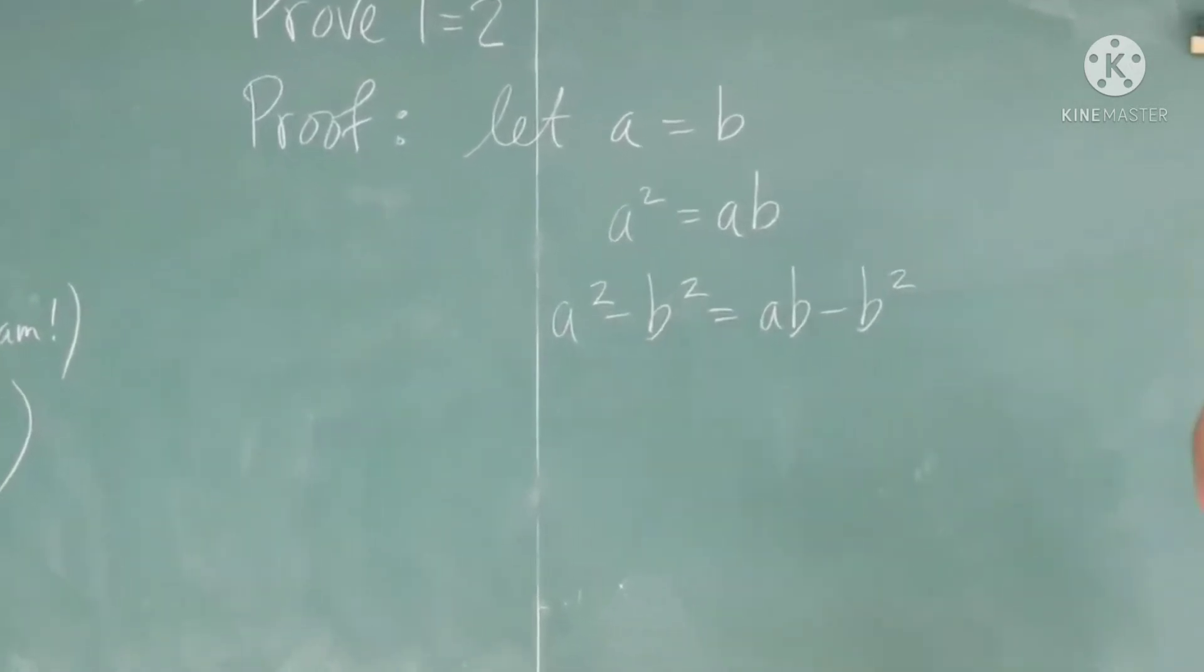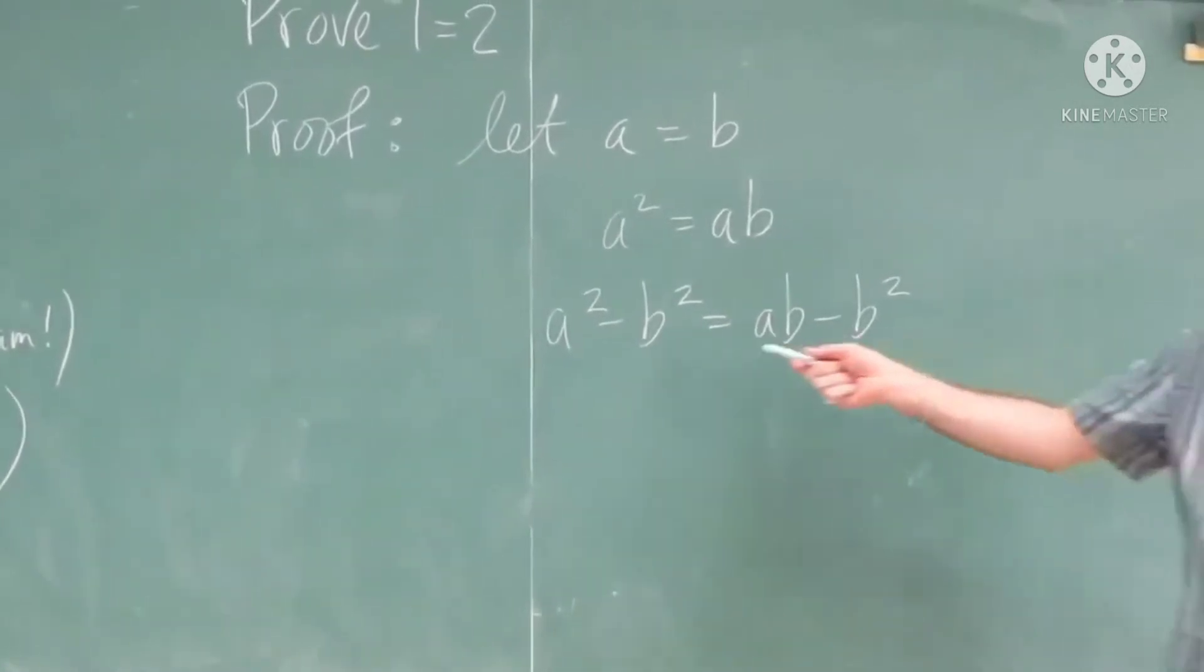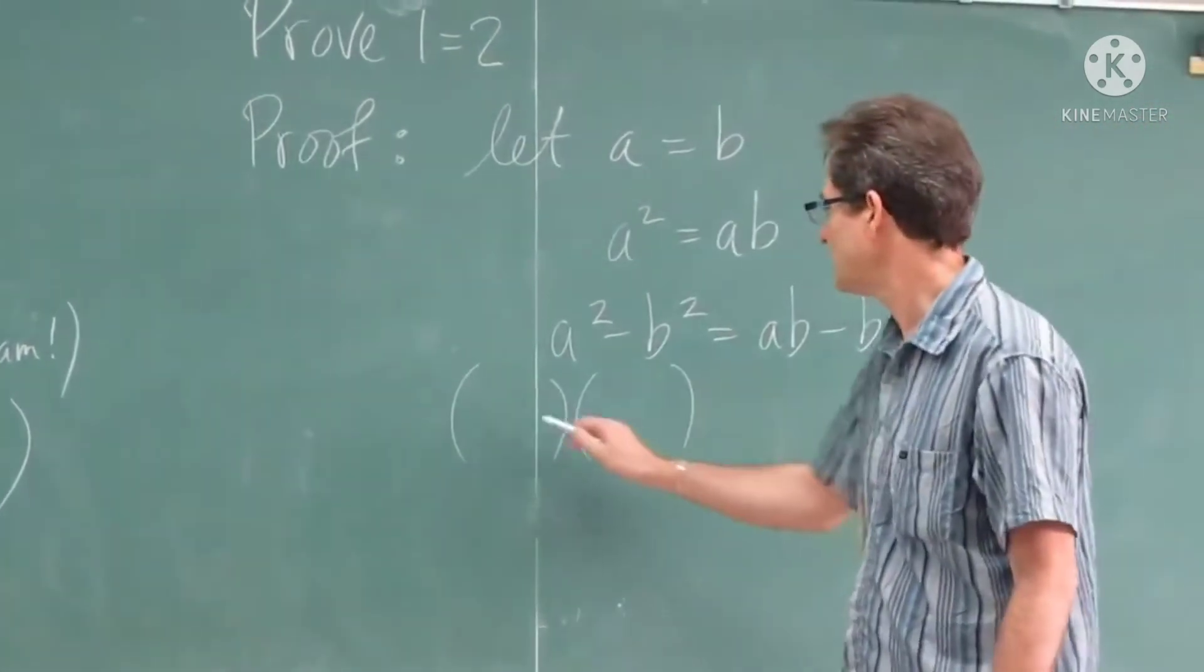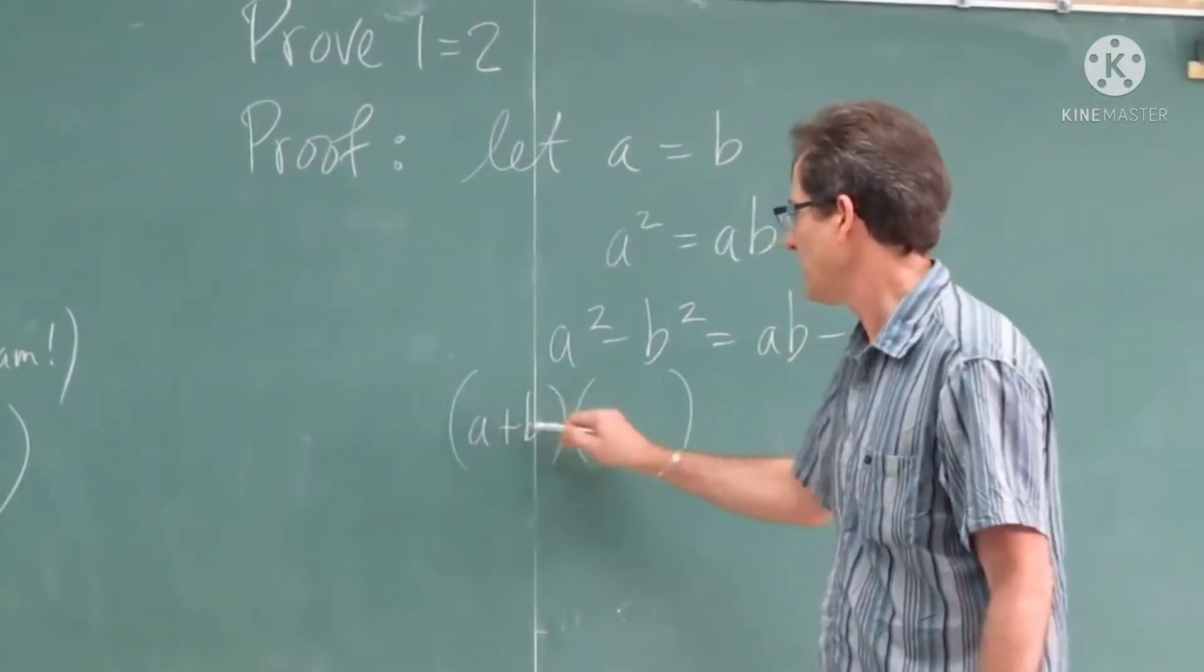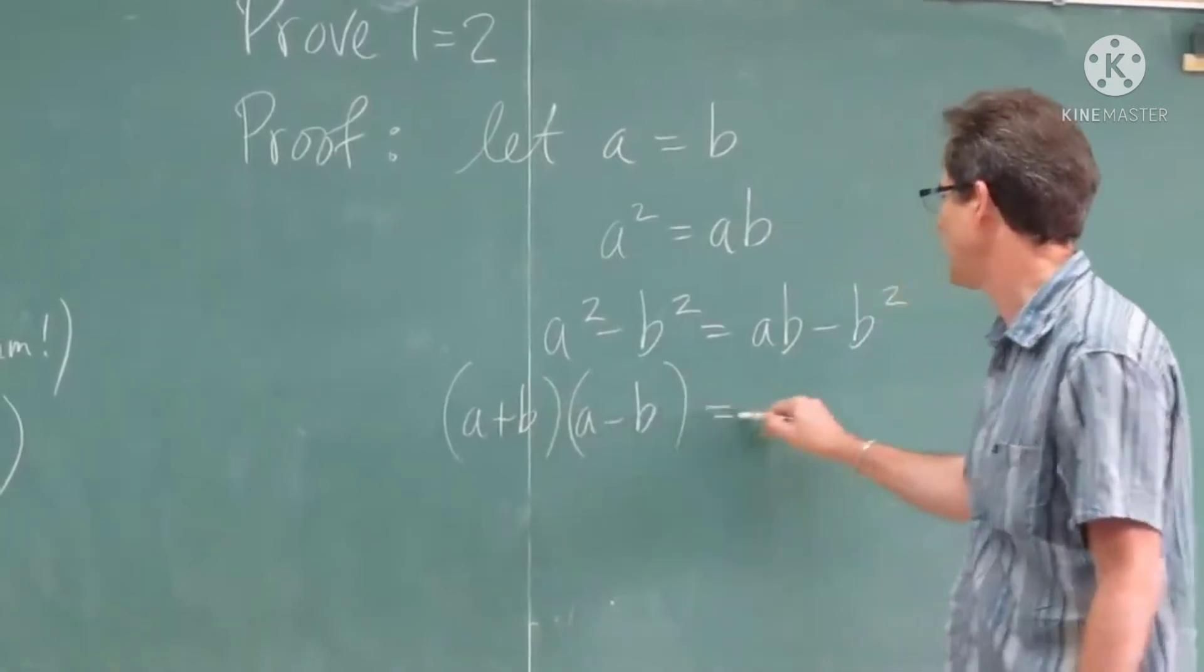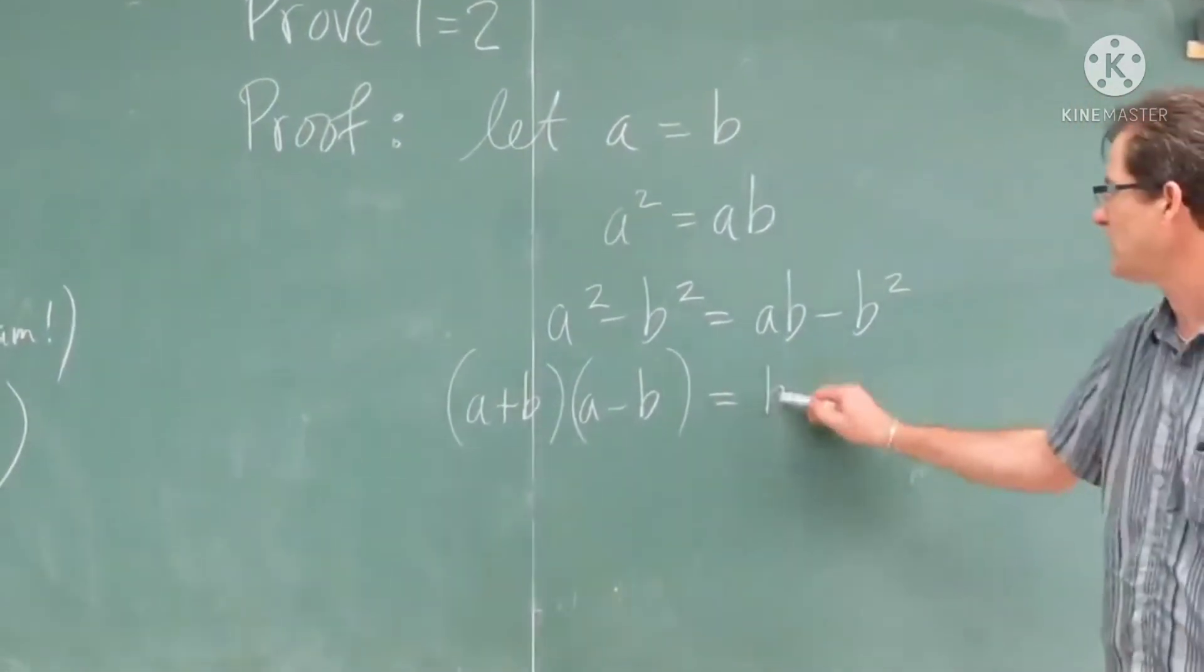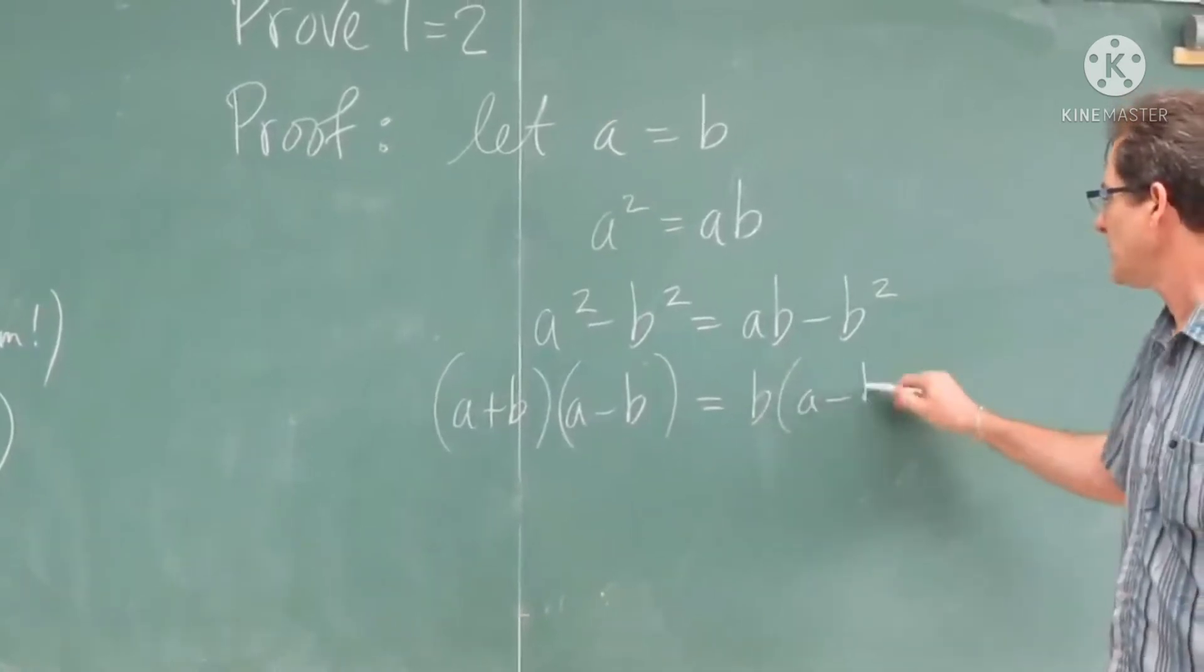Then, you can factor both sides by a different method. Left-hand side, difference of squares. So what do you get? A plus B times A minus B. On the right-hand side, you can factor by factoring out B. And you get A minus B.